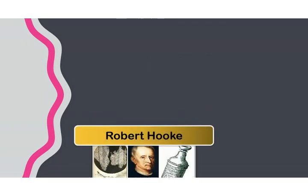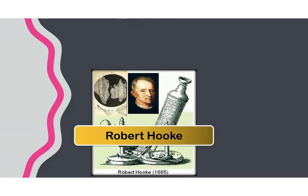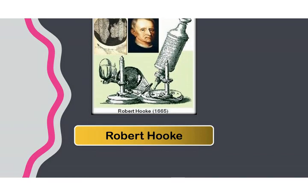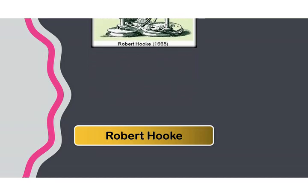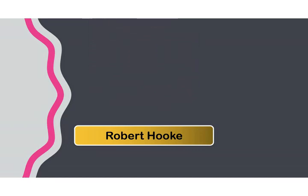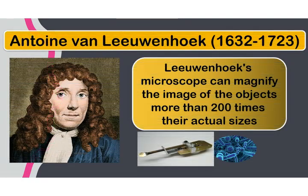He was inspired to make one after seeing Robert Hooke's book Micrographia, which included Hooke's observations with a small piece of cork. The small compartments observed using the microscope are known as cells, as described by Robert Hooke. Leeuwenhoek developed ways to make superior lenses by grinding and polishing 550 lenses to make his new lens, which can magnify images of objects more than 200 times.